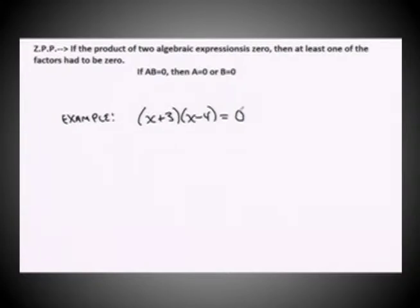In other words, if A times B equals zero, then A equals zero or B equals zero. So let's take a look at this example here.